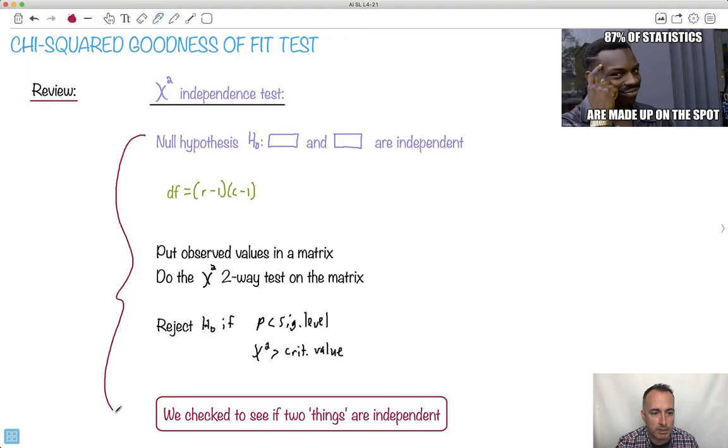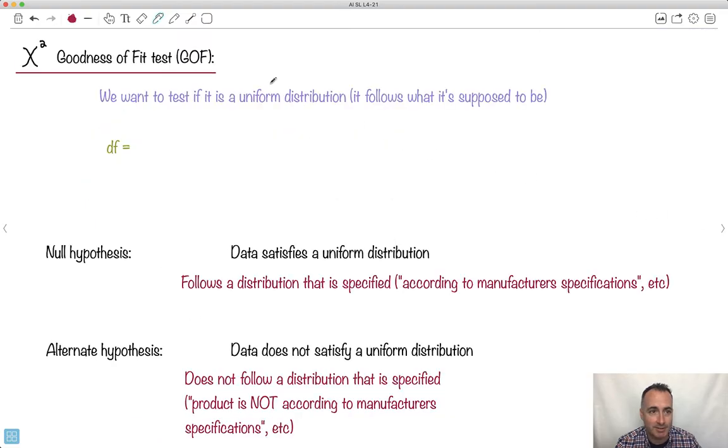Well, now we're going to do another kind of chi-squared, except it's called goodness of fit. So let's talk about that. It's called GOF for short.